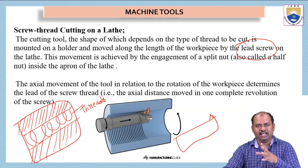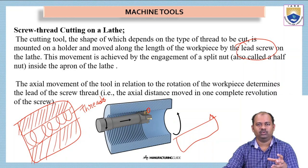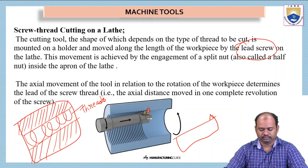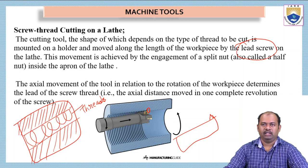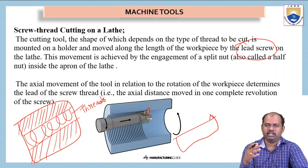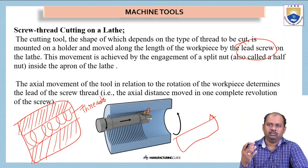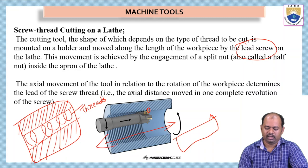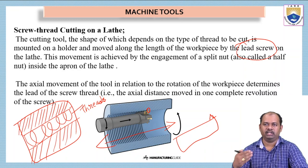The movement is achieved by the engagement of the split nut, also called a half nut, inside the apron of the lathe. The lead screw plays a very important role, helping the operator to get a helical shape on the surface. The axial movement of the tool in relation to the rotation of the workpiece determines the lead of the screw thread — that is, the axial distance moved in one complete revolution of the screw.